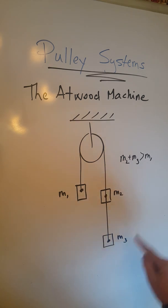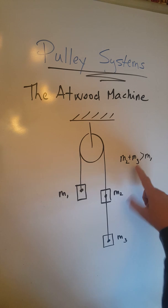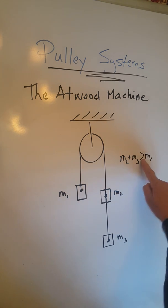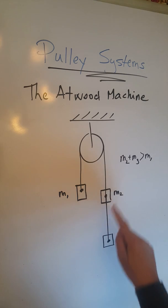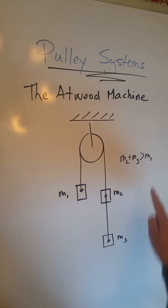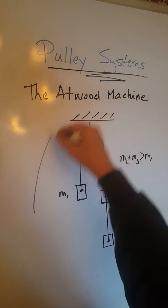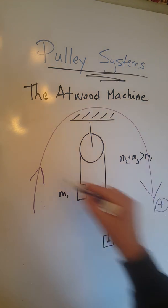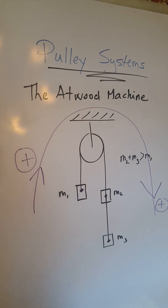Also the given condition is that m2 plus m3, these two masses added together, should be greater than m1. Because m2 plus m3 is greater than m1, we know for sure that this whole system will accelerate clockwise, and we are going to show that with this big arrow, and that must also tell me the positive direction for this whole system when I consider the forces.